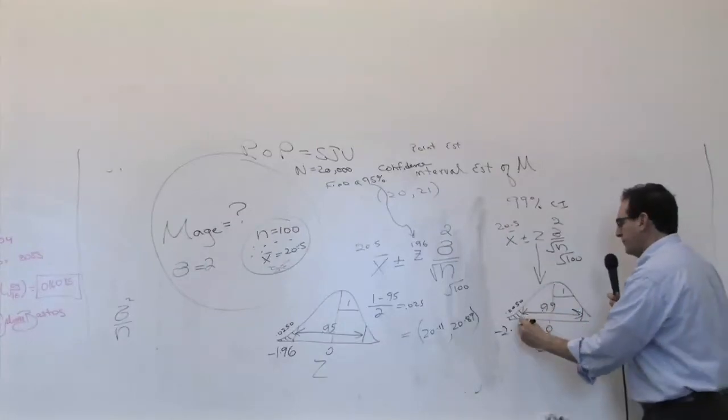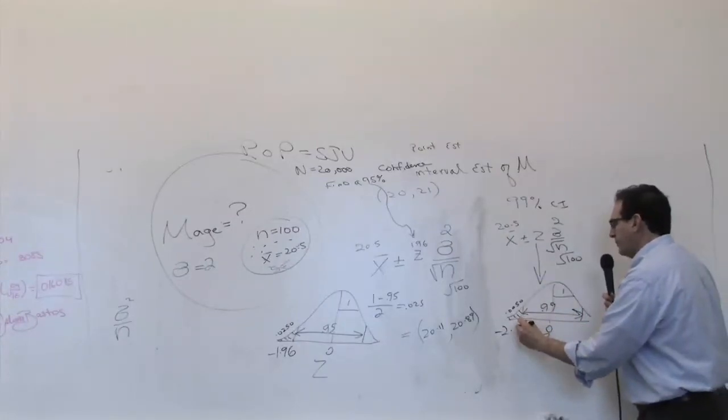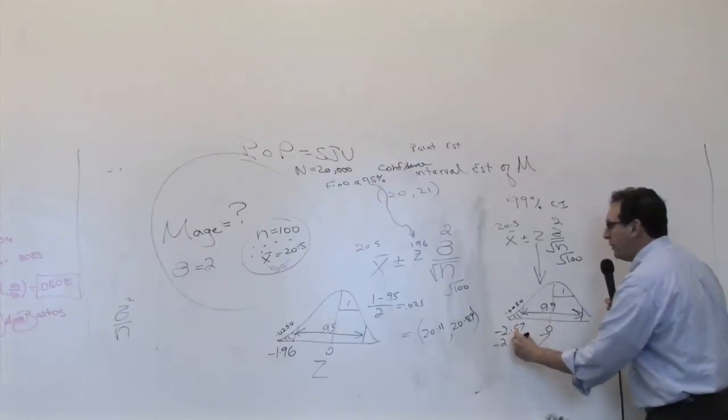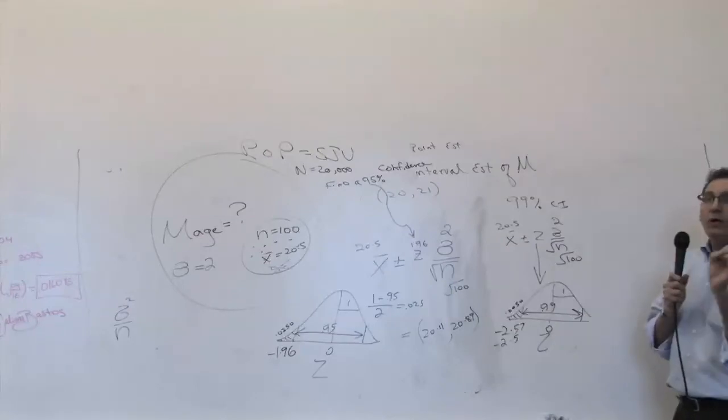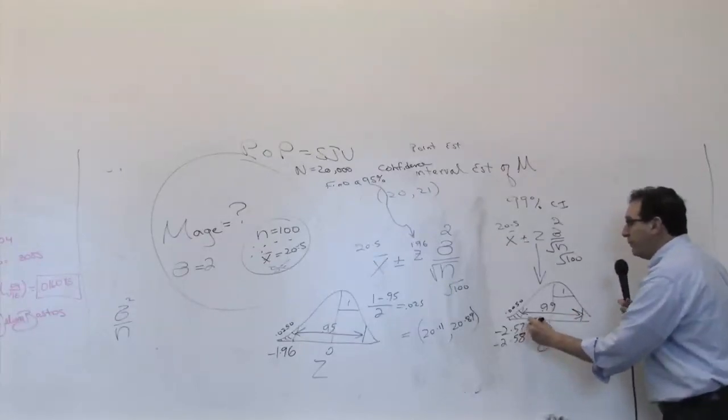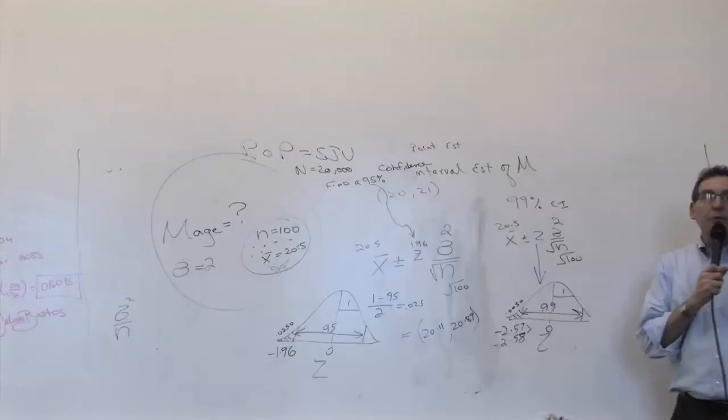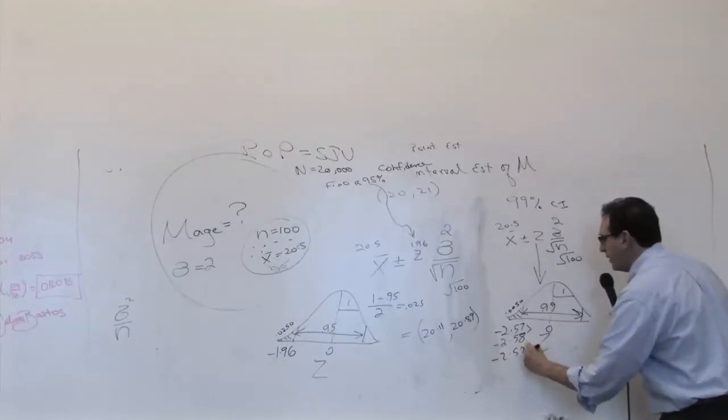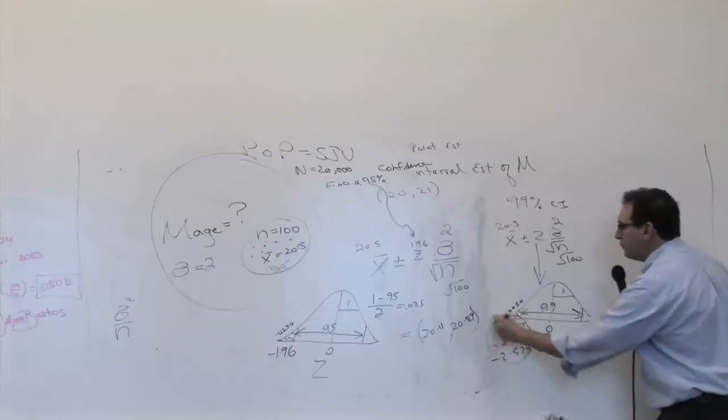Either one. Okay. So there are three answers you can put down, and all will be right. Negative 2.57, or what's equally close, negative 2.58. And technically, if you split the difference between them, you'll probably get a better answer, which is negative 2.575. So any one of these three answers will be acceptable.